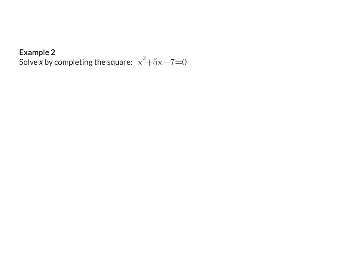Example two: solve x by completing the square. Once again, we want a bracket squared equal to a constant, so I'm going to start off by moving the minus seven to the right as plus seven. Now I need to manipulate my left so that I have my bracket squared, and I do this by taking the coefficient of x, the plus five, and halving that, which is five over two. That five over two I'm now going to square and add on the left, which means I add 25 over four. If I add on the left, in an equation I also have to add on the right. Then I can simplify my right hand side, and that will be 53 over four.